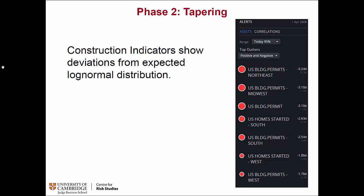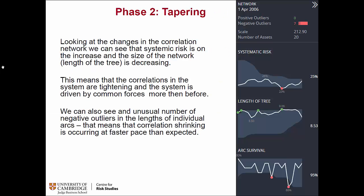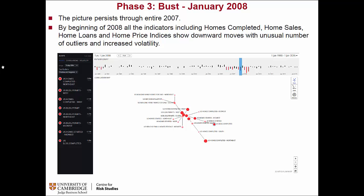In more detail, building permits sharply go down in Q1 of 2006 with really large outliers. Projecting that picture through the entire timeline, we see it clearly falls off the 95% confidence band in 2006 and stays underneath it for quite some time, going into an increased volatility state — essentially a regime change. The correlation network itself starts to grow tighter and systemic risk is increasing. Then in 2007 it's persistent, giving a confirmation of the warning, with outliers now in homes completed and the downward move continuing.